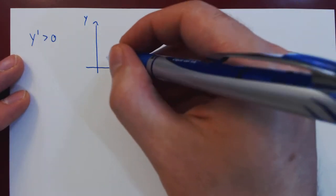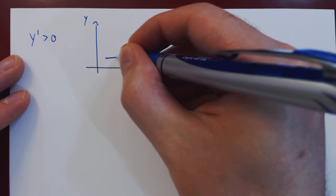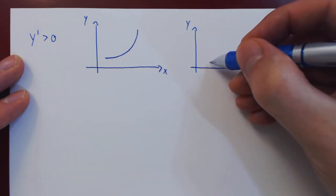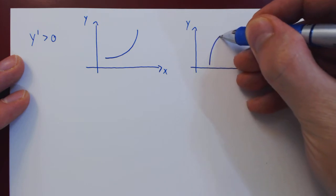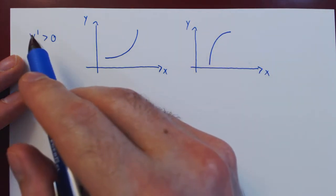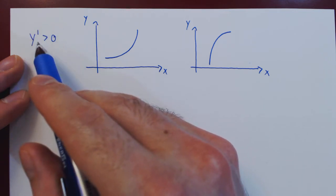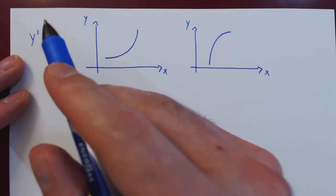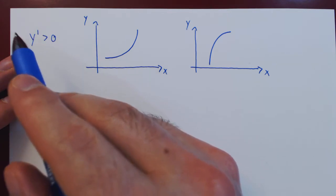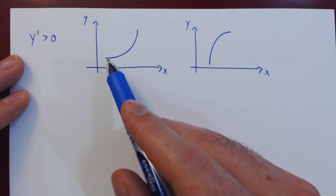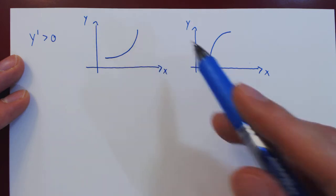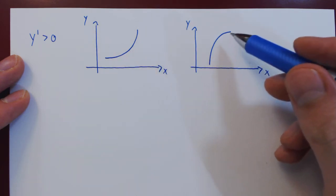It could be increasing concave up, or it could be increasing concave down. So even though the first derivative tells us that by being positive the graph of the function is increasing, the first derivative cannot differentiate between increasing in a concave up fashion and increasing in a concave down fashion.